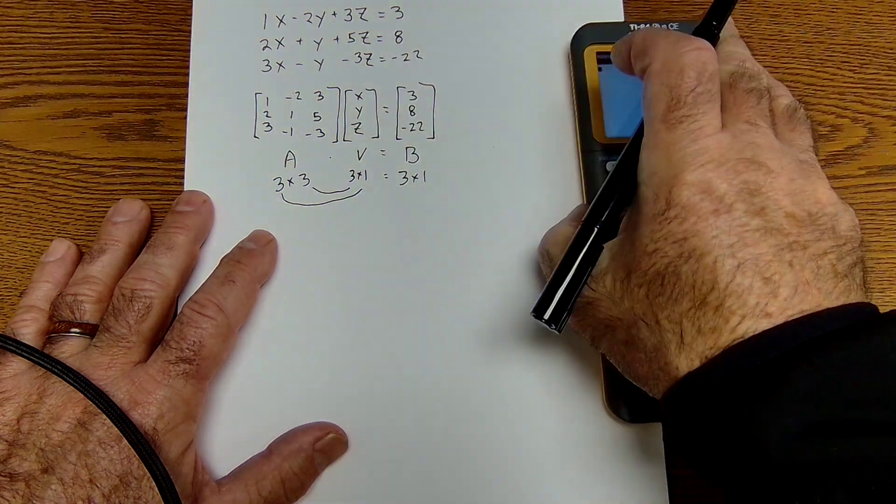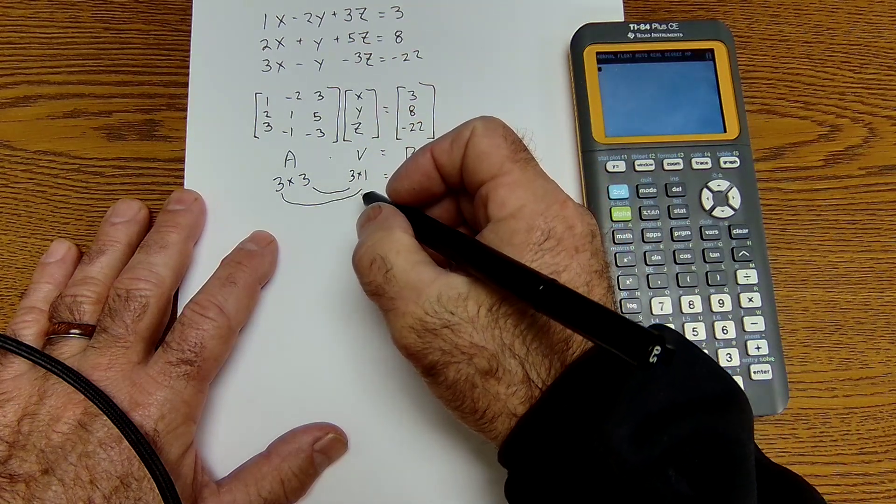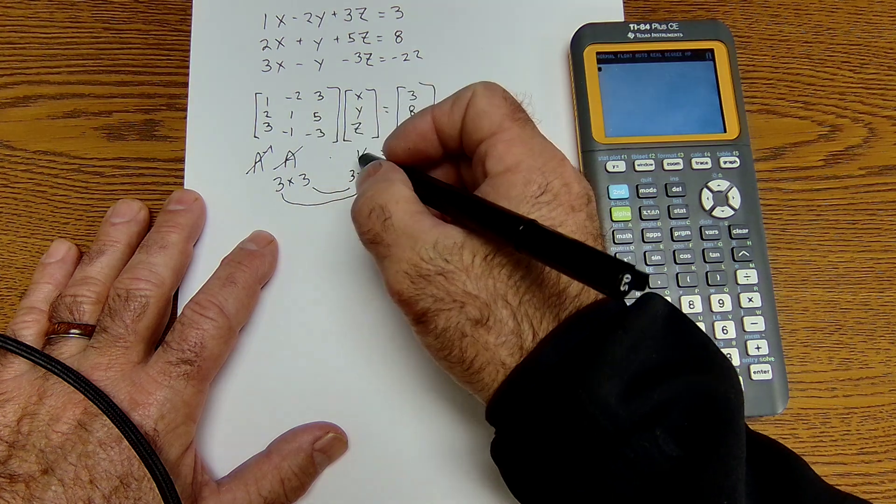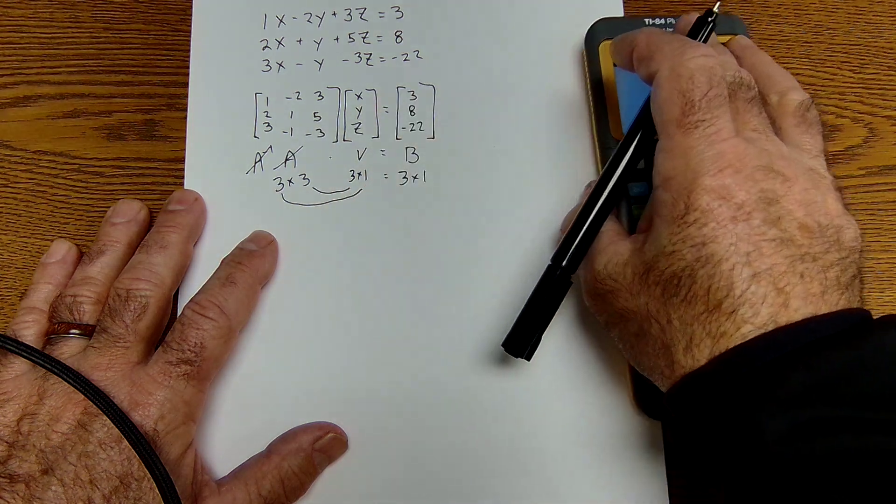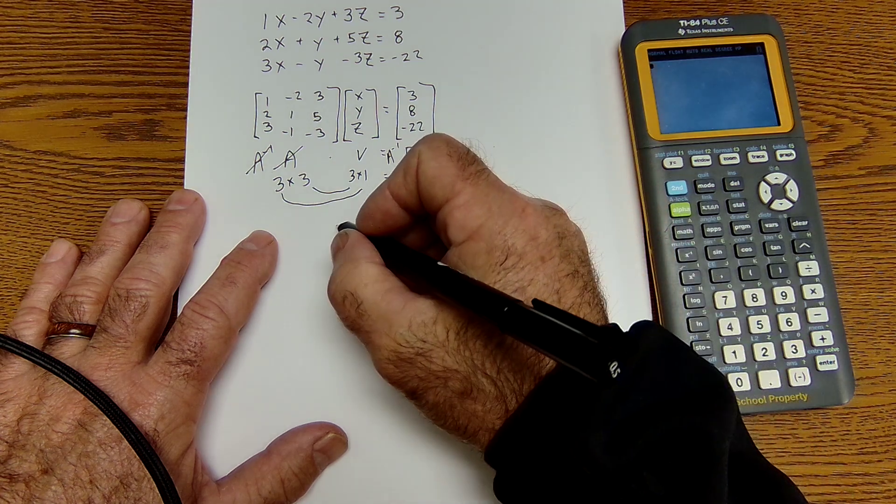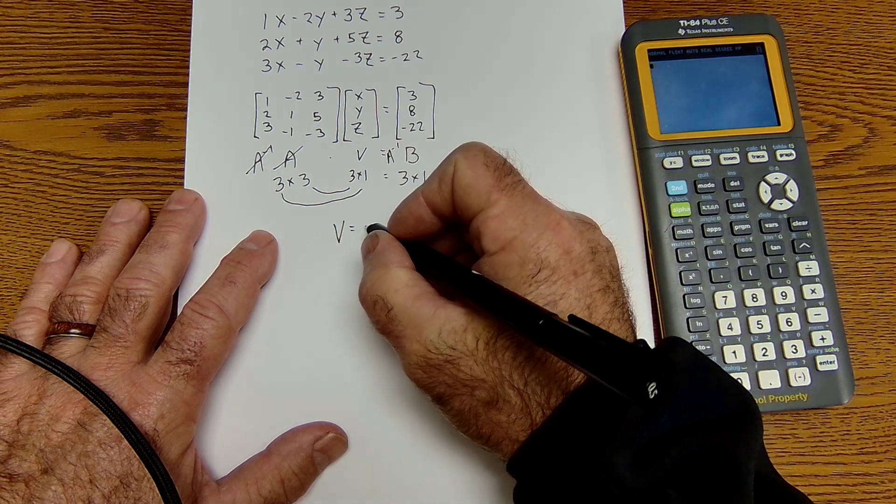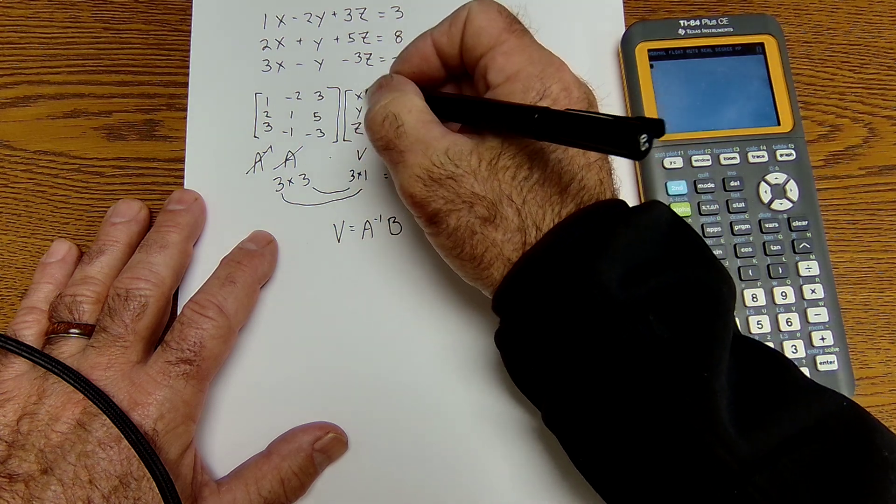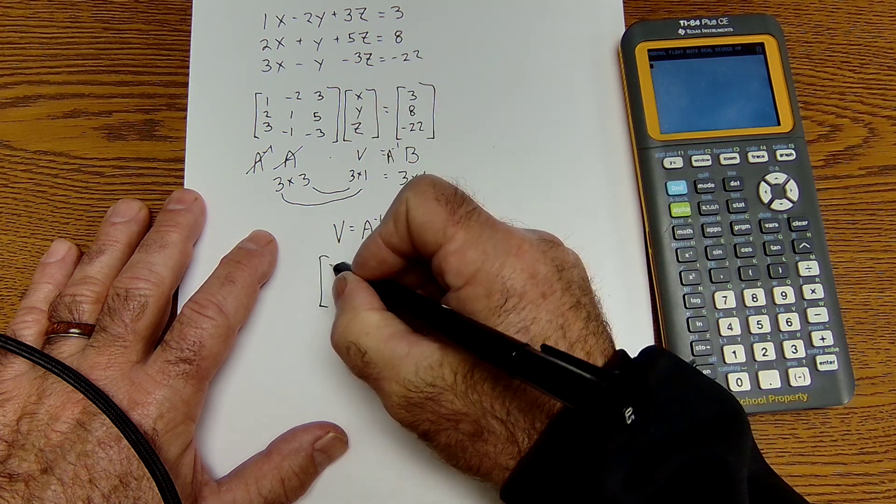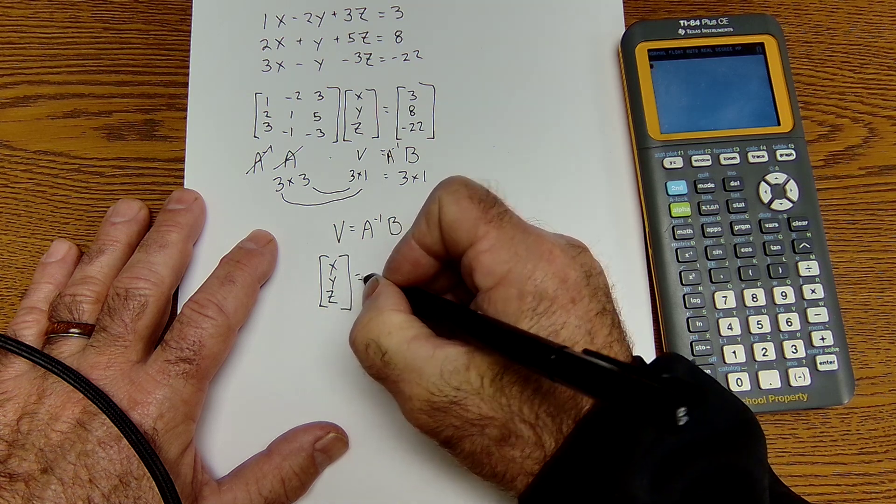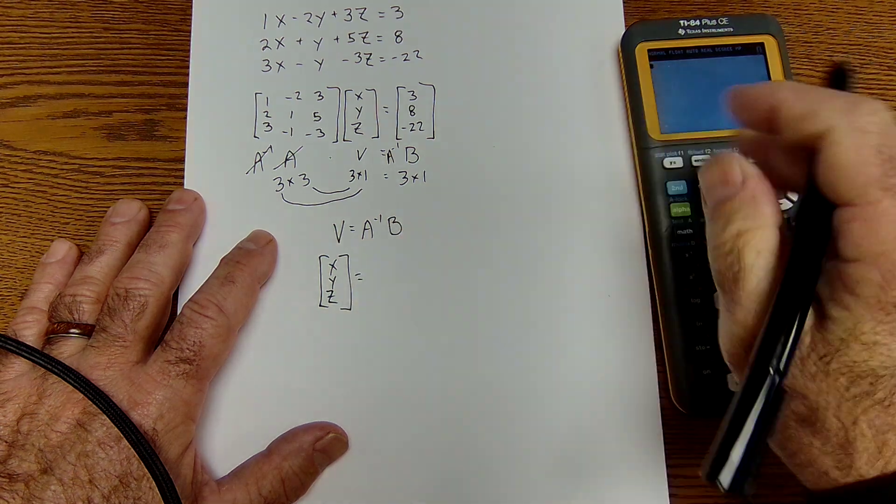And then I want to get my variables, my x, y, and z by themselves, multiply the left side by the inverse. That and that will cancel, giving me V by itself. If I do that to the left side, I also have to do it to the right side. So here I'm going to have variable is equal to the inverse of A times B. Here's my variable matrix, x, y, z, and it's going to be equal to the inverse of A times B.